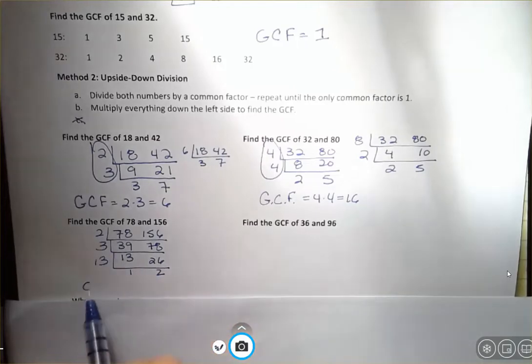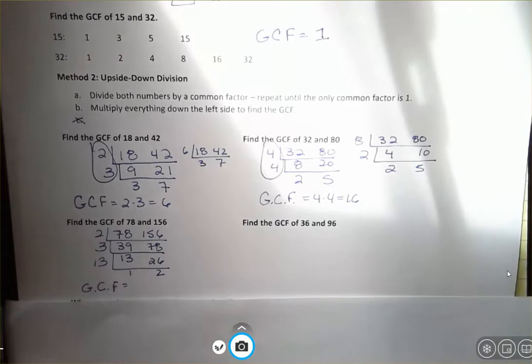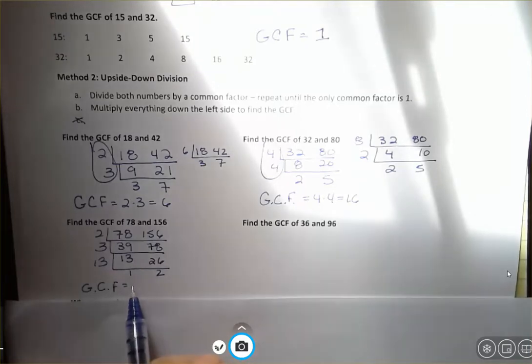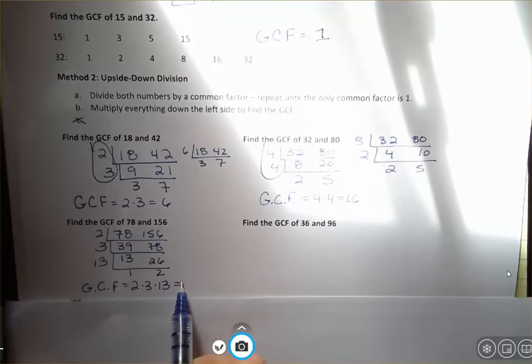Again, you may have used a totally different set of numbers. You might have started off with 13 or started off with six or started off with three. You should still get the same numbers at the bottom. And when you multiply, for me, I have two times three times 13, which is 78. And maybe you noticed already that 78 times two is 156.